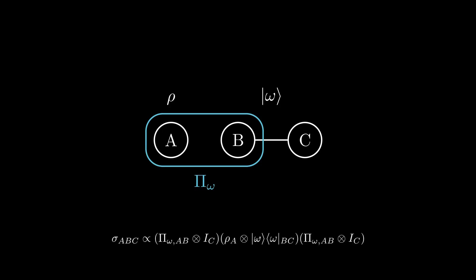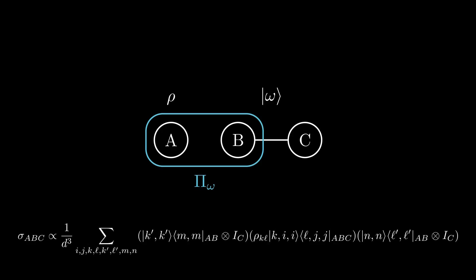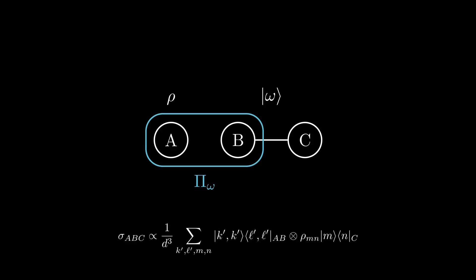Nevertheless, for the sake of simplicity, we will assume that the intended projection is performed. Defining the new state of the entire system as σ, we have that this particular projection effectively turns the state of C into ρ. However, note that these two steps are actually interchangeable, since the operators are acting non-trivially on completely separate Hilbert spaces.